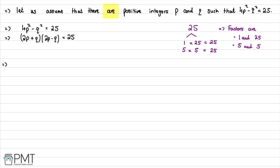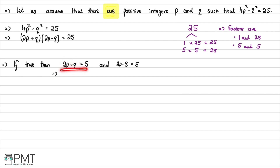If our assumption is true, then looking at the 5 × 5 case first: 2P + Q = 5 and 2P − Q = 5. We can solve for P and Q using simultaneous equations. Rearranging the first equation gives Q = 5 − 2P, and rearranging the second gives Q = 2P − 5.